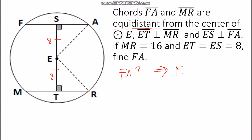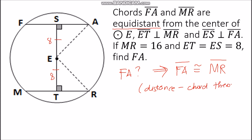Because the two segments ES and ET are equal, we can say that segment FA is congruent with segment MR by the Distance Chord Theorem — whenever chords are equidistant from the center, the chords are congruent. Since MR is given as 16, FA is also 16 units.